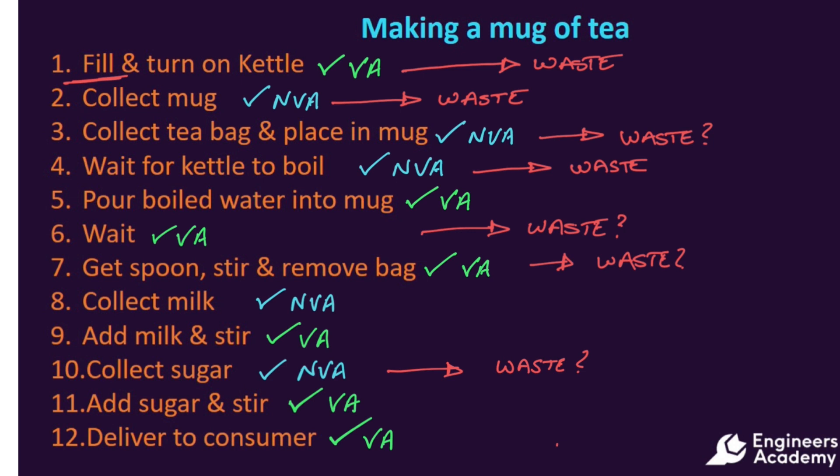Stirring occurs in steps 7, 9 and 11. We would possibly only need to stir the tea once at the end, so these processes would need to be examined to see if they are unnecessary, and again, if they are, they would become waste.